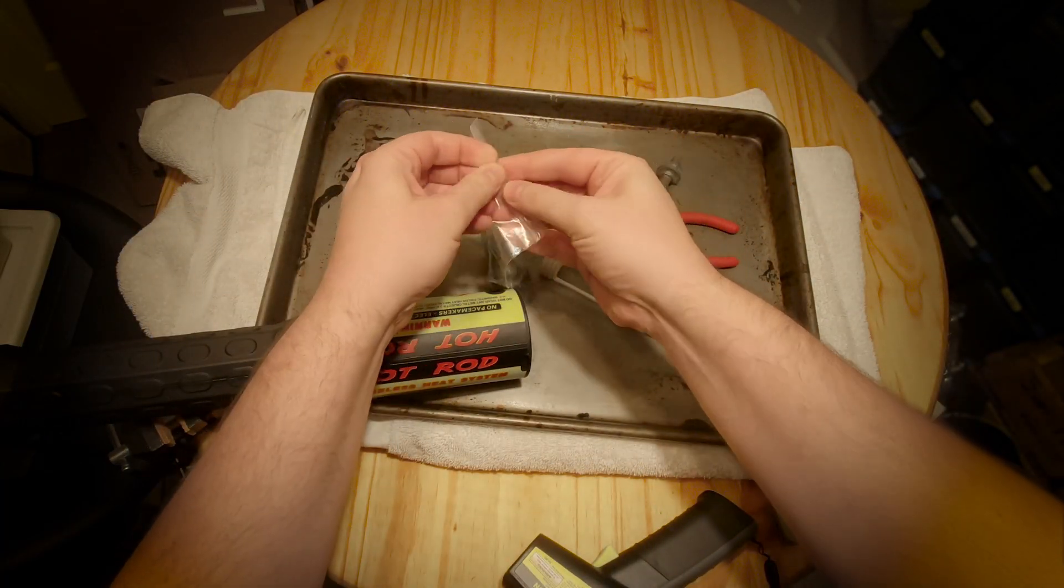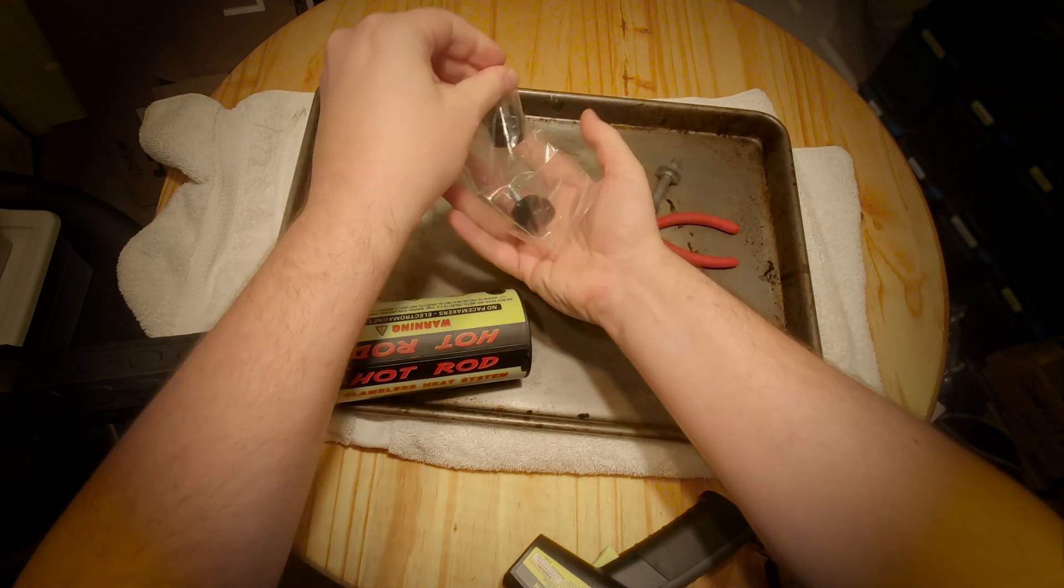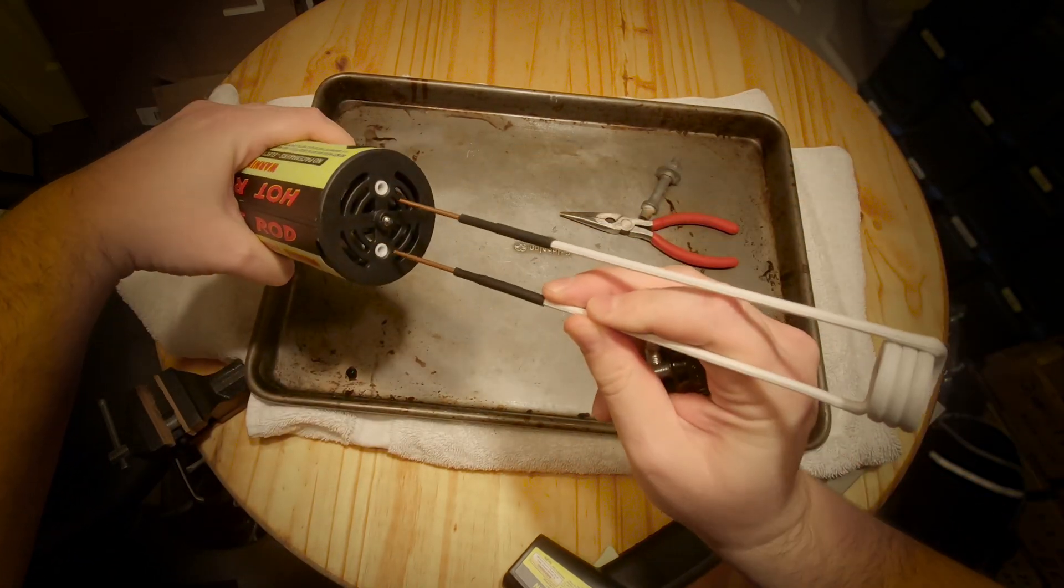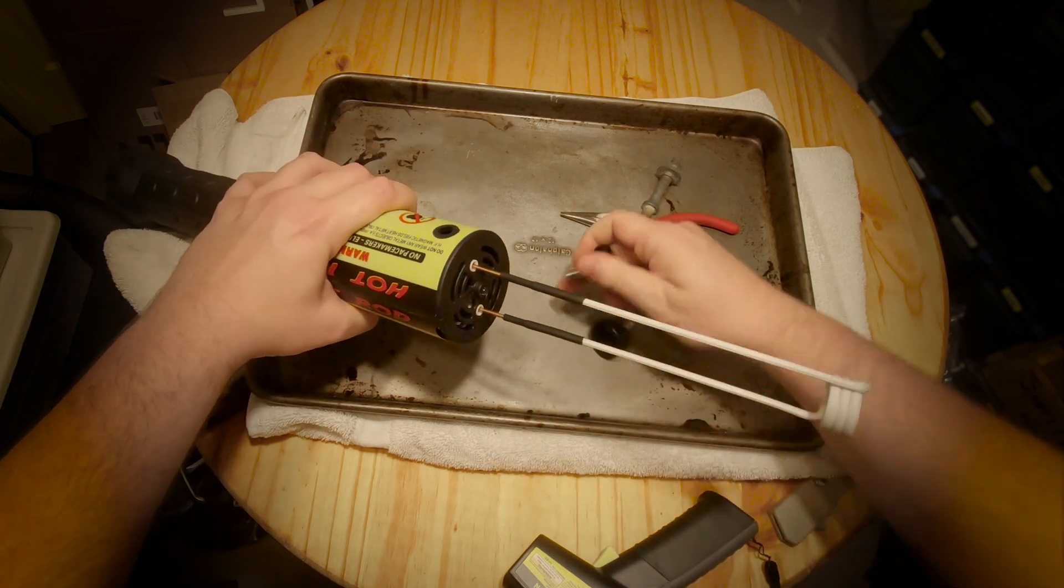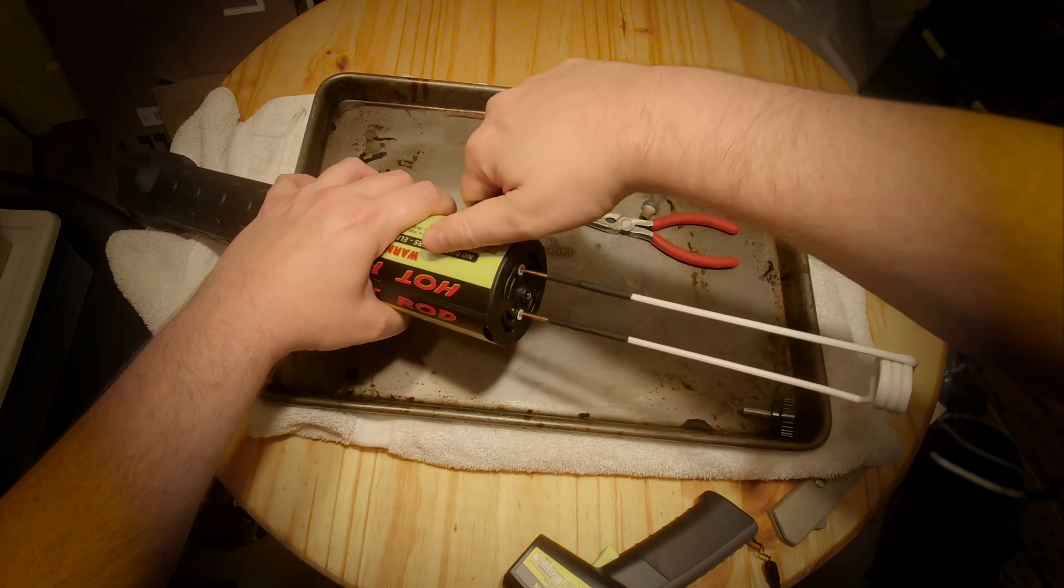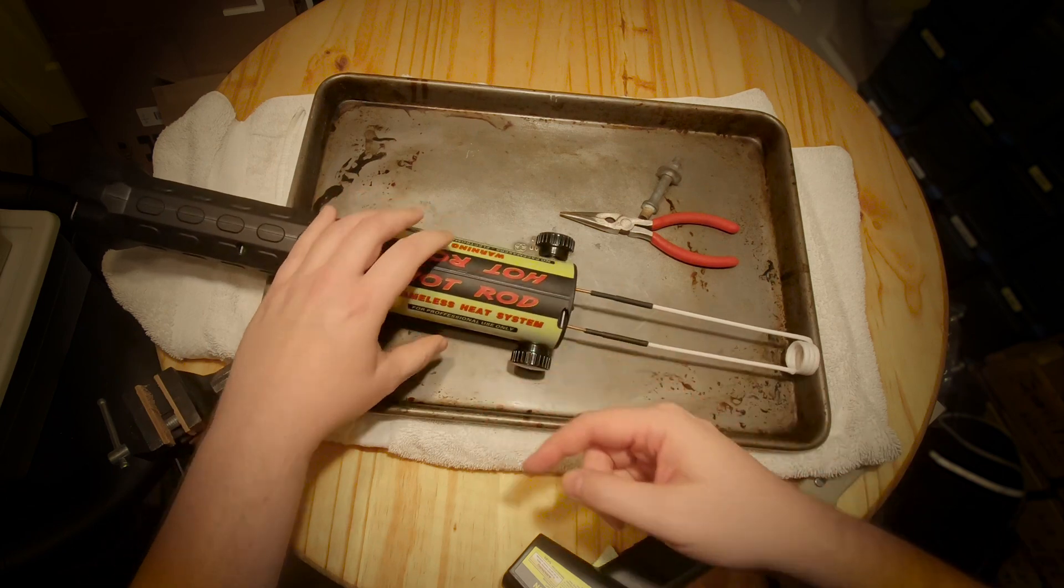Alright so getting this thing set up is pretty simple. We just have to take these little screws out here and insert the coil into the end of it like so. Screw in the little Frankenstein bolts. There we go. That's good to go. Now let me get it plugged in.